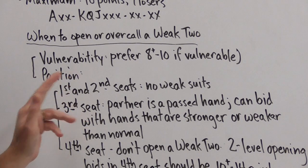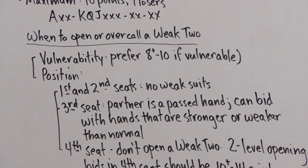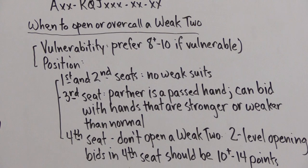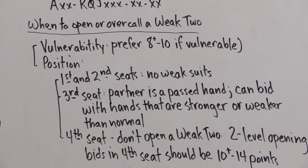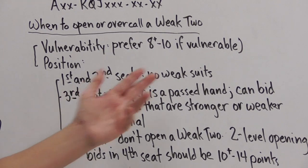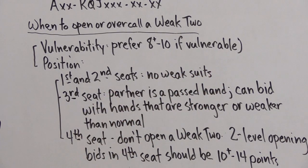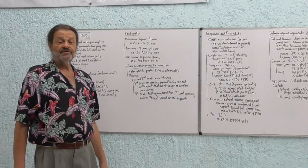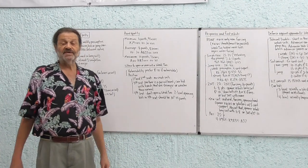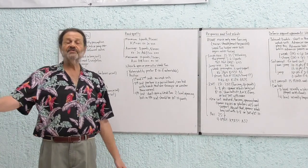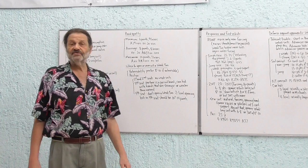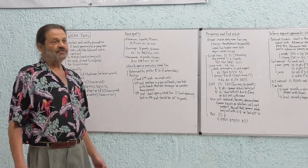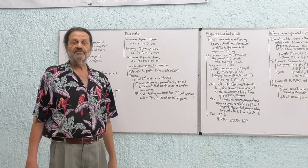Okay, when we're in third seat, funny things can happen because partner's already a passed hand. So at this point we can adapt our criteria for bidding. We can bid with hands that are stronger or weaker than we would normally. So for example with maybe only four points and six spades to the ten, if the bidding's gone pass pass, you might open that hand two spades anyway because you know left hand opponent is planning to come in.